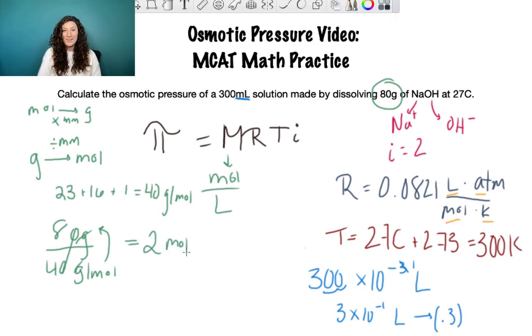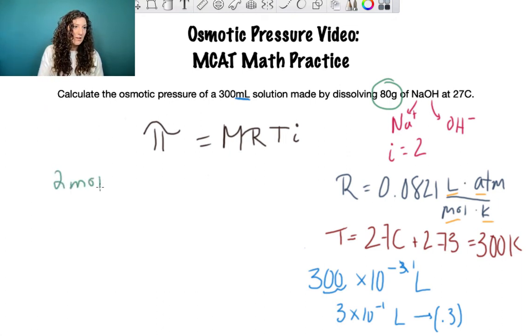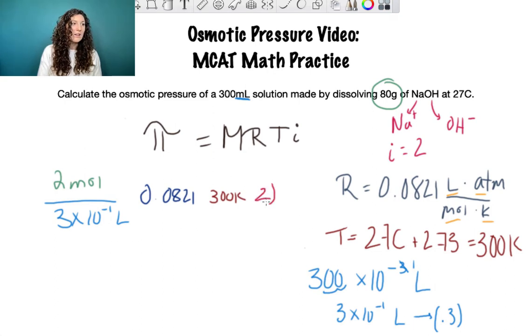We have all the numbers we need now. We have 2 moles of NaOH, we convert that into molarity using our liters and then we multiply. So we have 2 moles divided by 3 times 10^-1 liters for our molarity, then we have 0.0821, then 300 Kelvin, and 2 for our unitless i value. Still looks pretty complicated to do without a calculator, so I'm going to take one number at a time and show you how to make it easier.